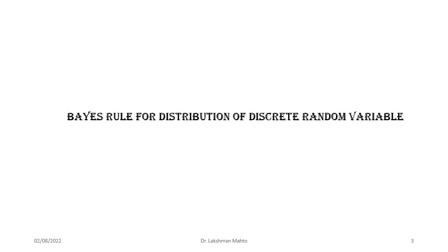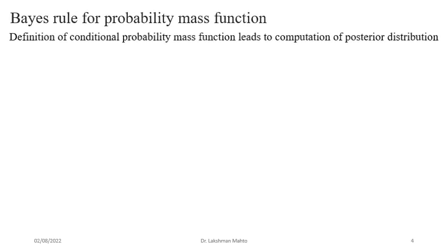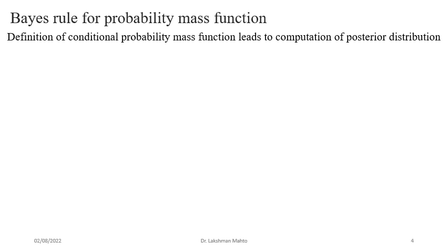Coming to the first part of this lecture — Bayes rule for distribution of discrete random variables. We have already seen the definition of conditional probability mass function. We just need to restate that in order to get Bayes rule for distribution of discrete random variables. If we do a little bit of manipulation of the conditional PMF definition, that will lead to the computation of the posterior probability distribution.